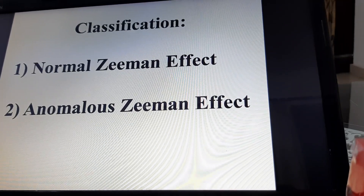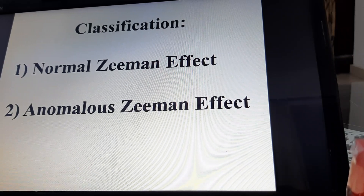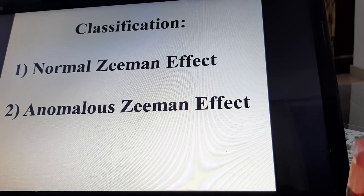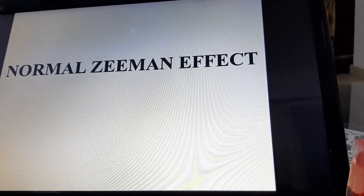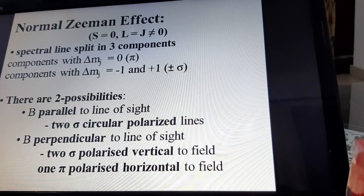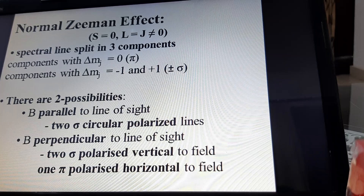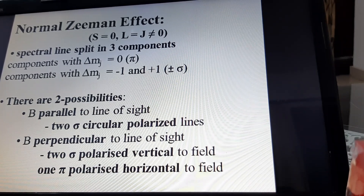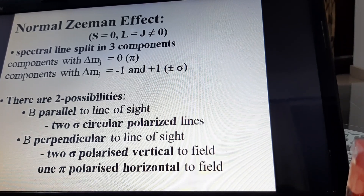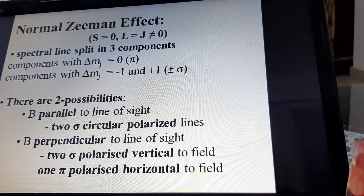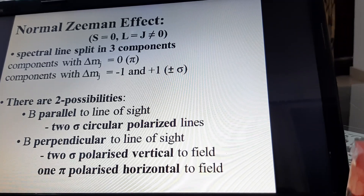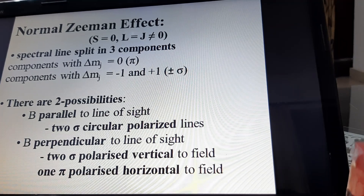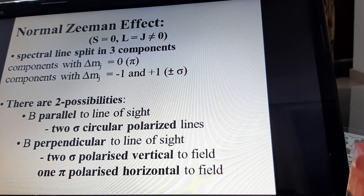The Zeeman effect is classified into two categories: the first is the normal Zeeman effect and the second is the anomalous Zeeman effect. In the normal Zeeman effect, the S value is zero and L and J values are equal but not zero. In this case, the spectral line splits into three components.